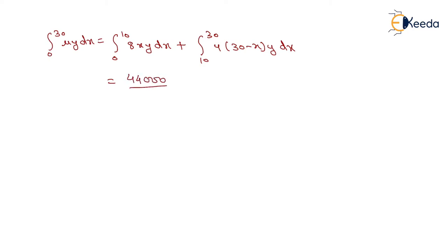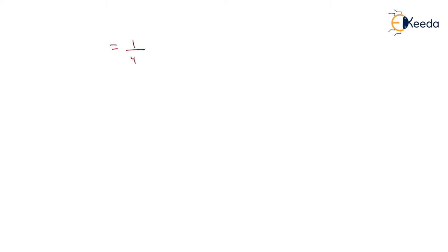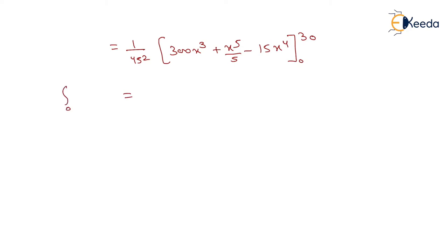For the denominator, we compute the integral from 0 to 30 of Y²·dX, which equals the integral from 0 to 30 of X²(30 minus X)² divided by 45² dX. Expanding, this becomes 1/45² times the integral of (900X² plus X⁴ minus 60X³) dX. Evaluating as 1/45² times [300X³ plus X⁵/5 minus 15X⁴] from 0 to 30, we get the integral of Y²·dX equals 400.